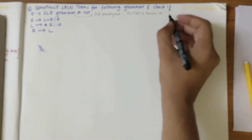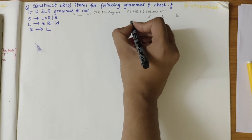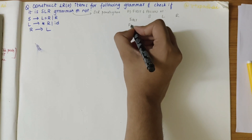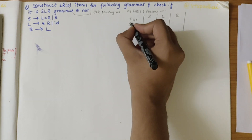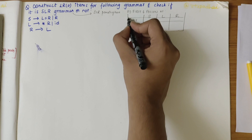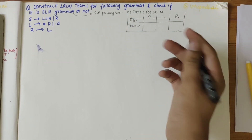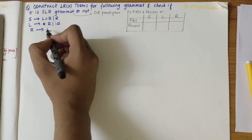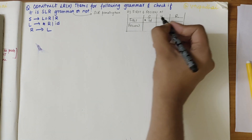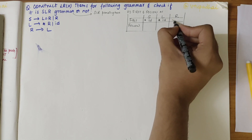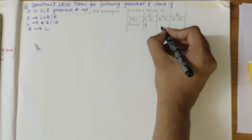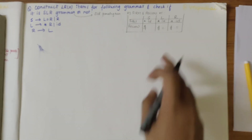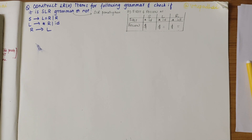The non-terminals here are S, L, and R. I will compute FIRST and FOLLOW directly. If you want to know how to find FIRST and FOLLOW, do watch my previous videos. FIRST of S would be star and ID, and the same applies for L and R. Moving on to FOLLOW: FOLLOW of S is dollar, and FOLLOW of L and R includes dollar and equals.